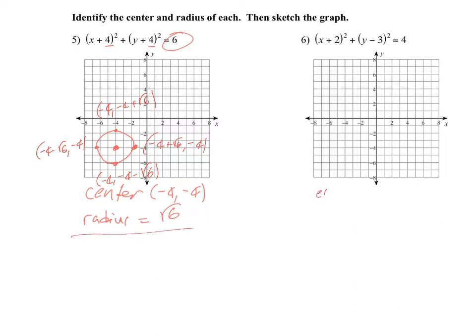For the second circle, the center is at (−2, 3) and the radius is √4, which is 2. Starting at (−2, 3), moving 2 in each direction: right gives (0, 3), left gives (−4, 3), up gives (−2, 5), and down gives (−2, −1).